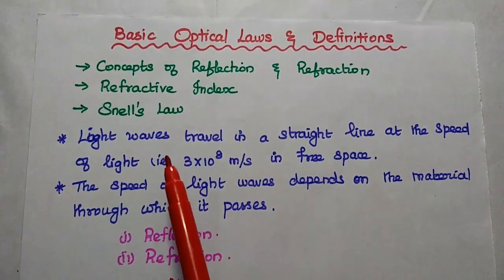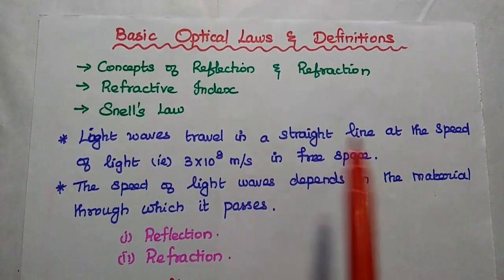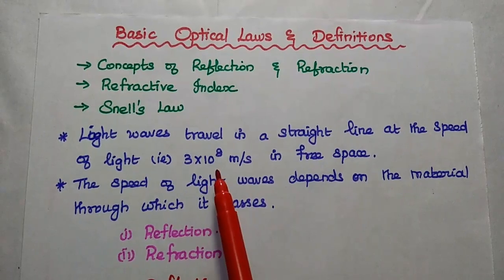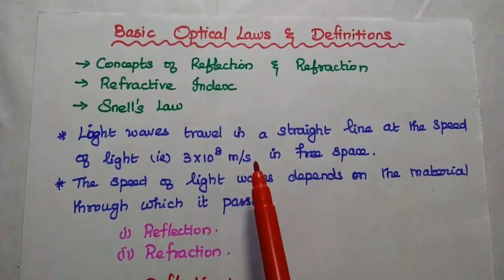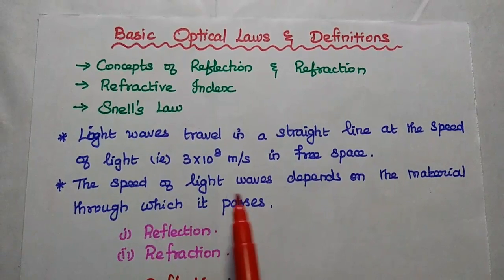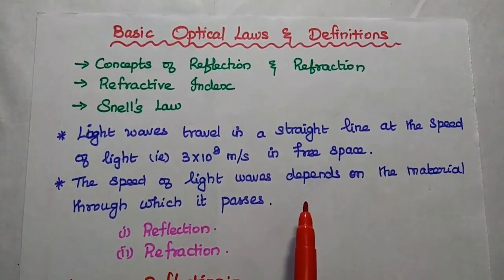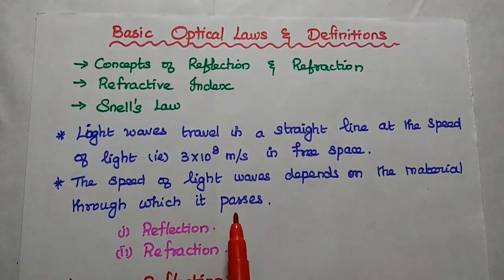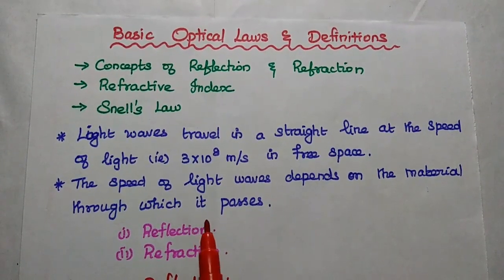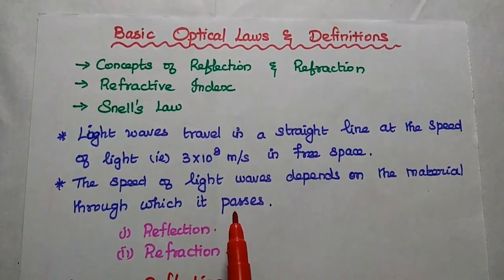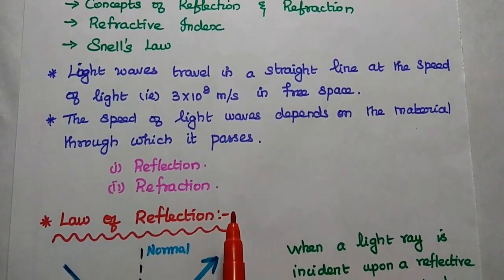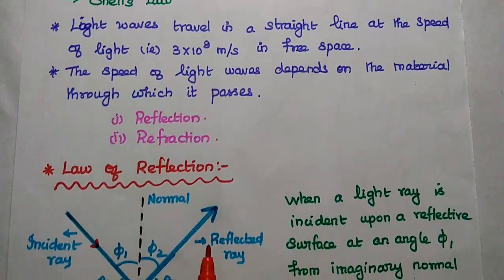In general, light waves travel in a straight line at the speed of light, that is 3 into 10 to the power 8 meter per second in free space. But the speed of light waves depends on the material through which it passes. That means, when the light wave travels through a material, it exhibits certain behaviors like reflection and refraction.